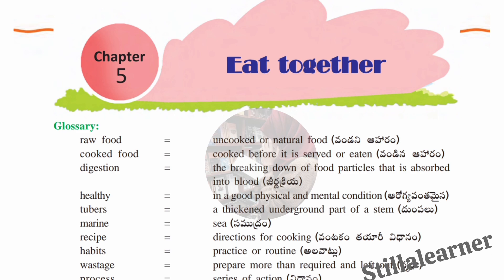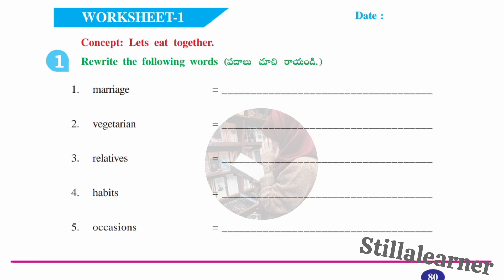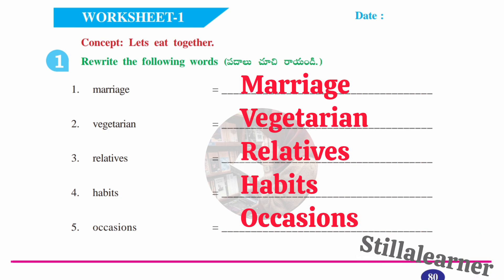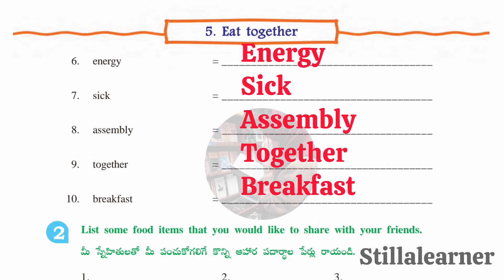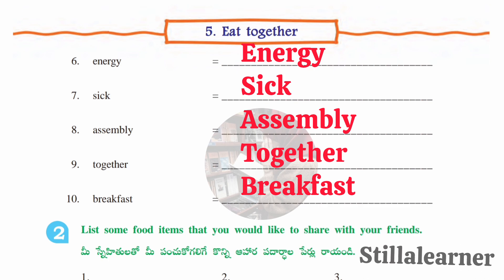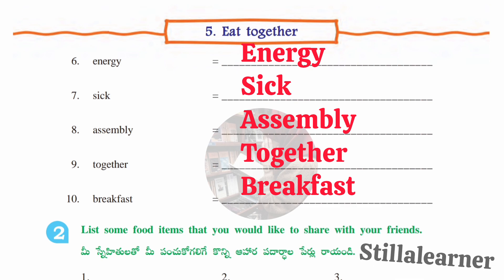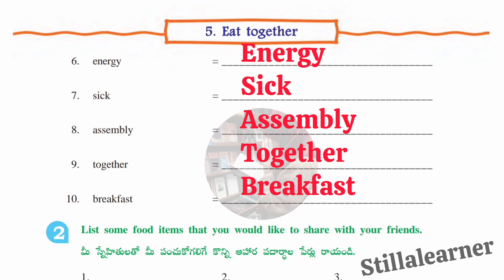In the first section we are given some words which we need to rewrite by writing the first letter as capital. The ten words are: marriage, vegetarian, relatives, habits, occasions, energy, sick, assembly, together, and breakfast.